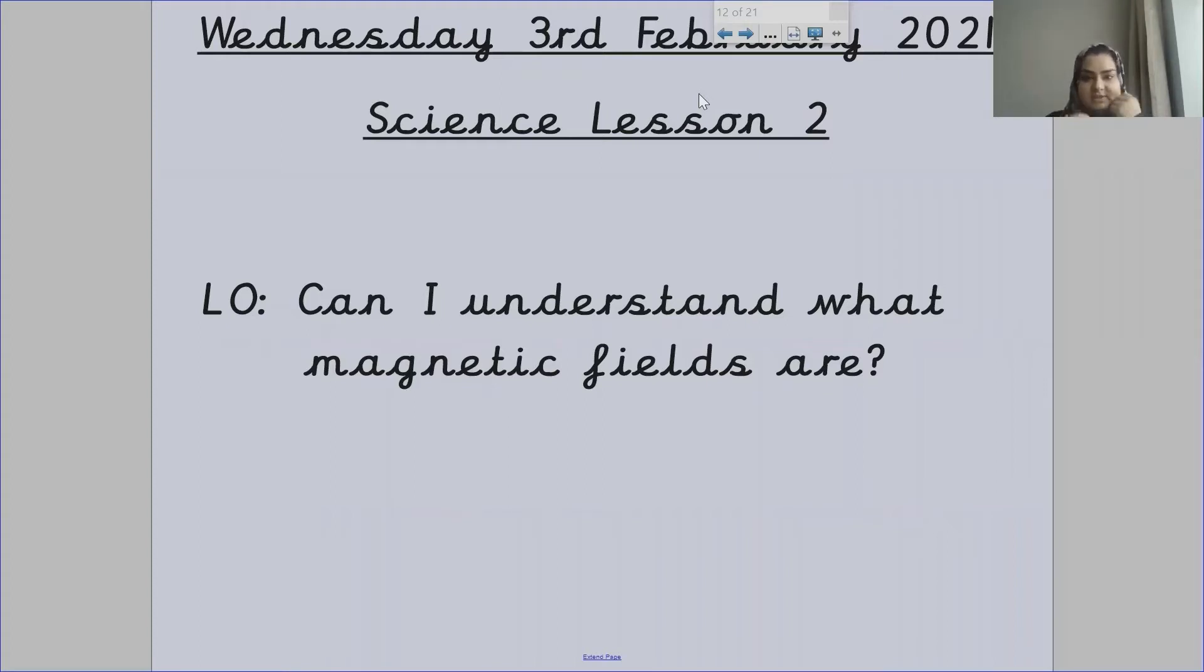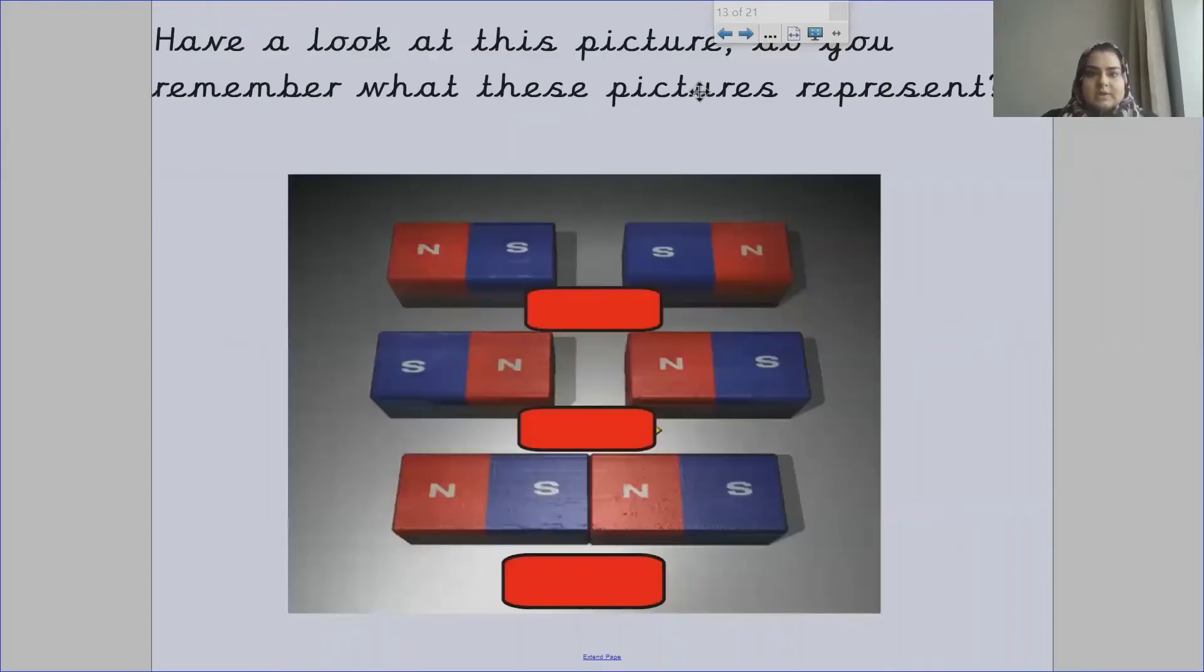Our learning objective today is can I understand what magnetic fields are? Have a look at this picture. Do you remember what these pictures represent? Have a look at which way the poles are facing. What do you think these pictures represent?